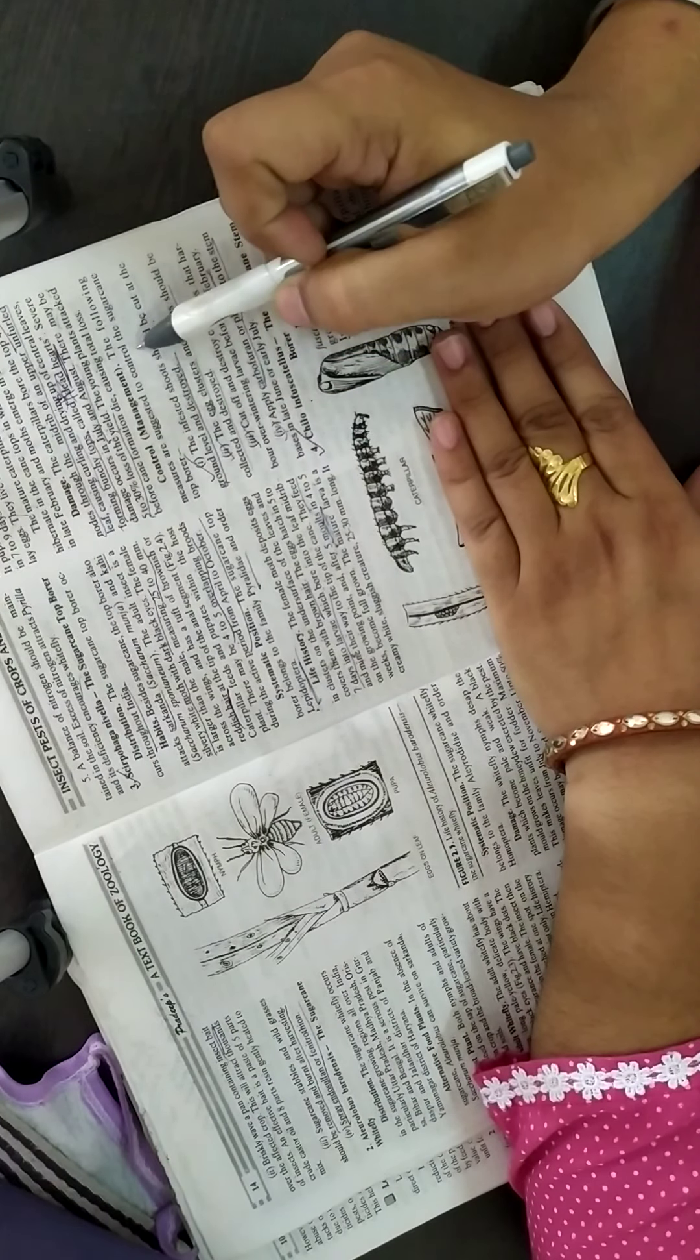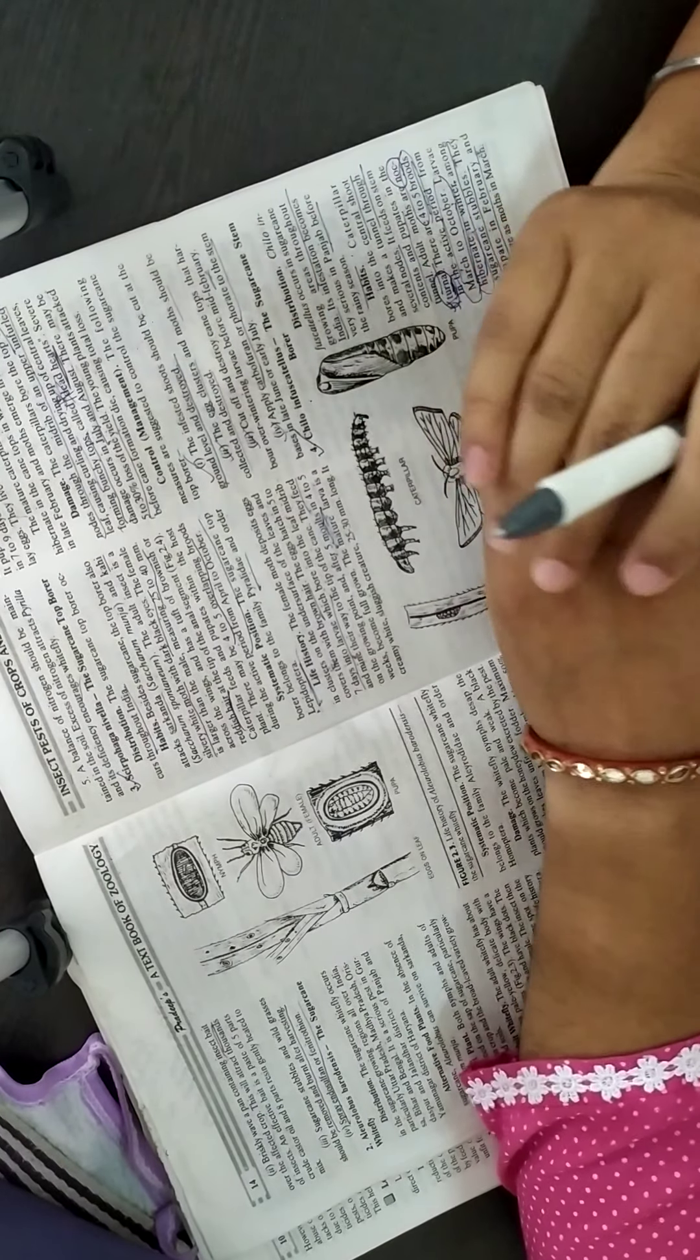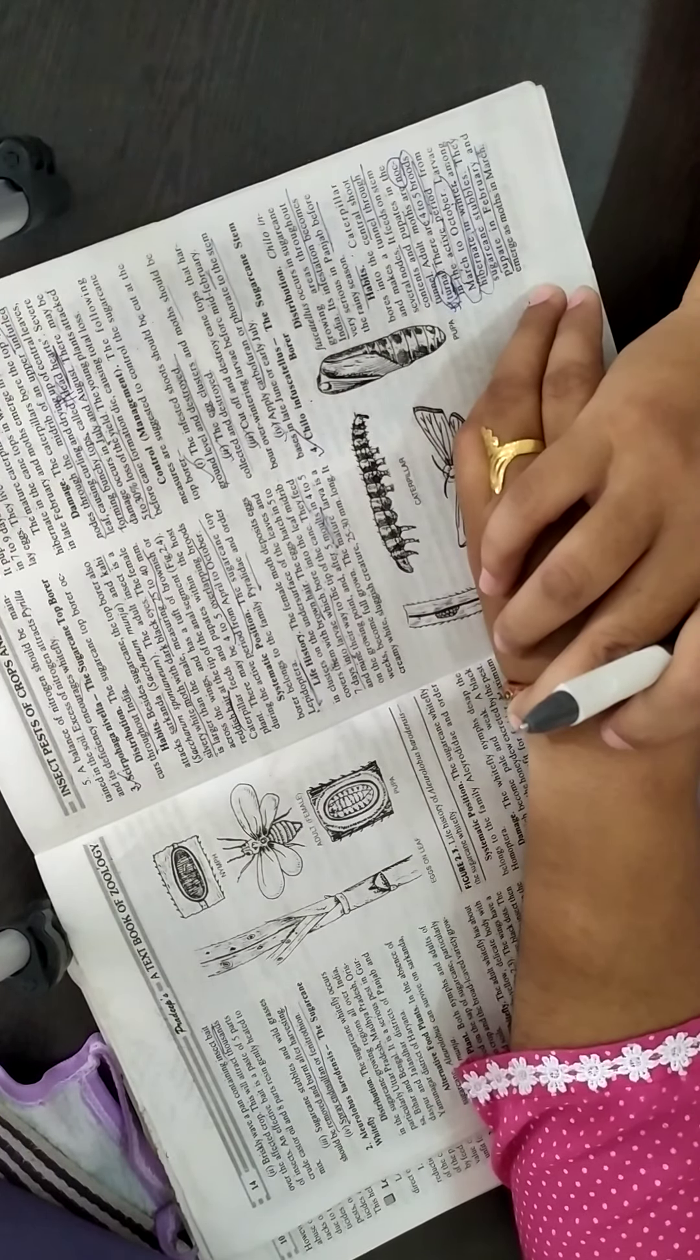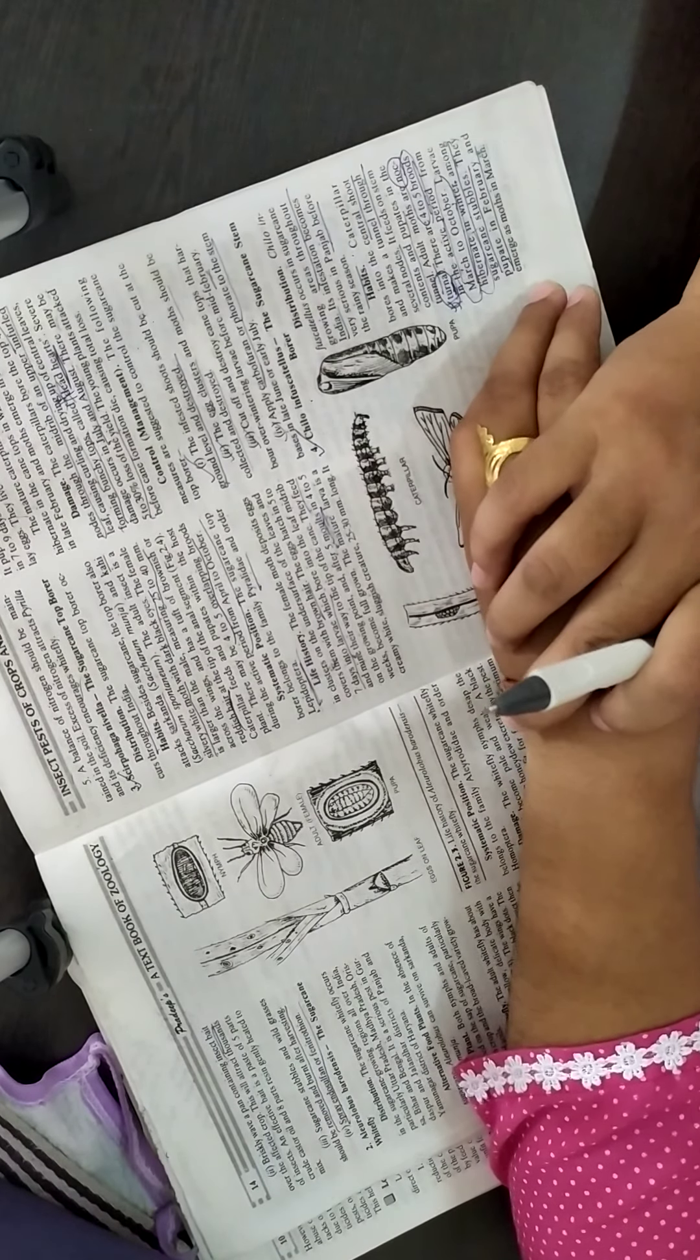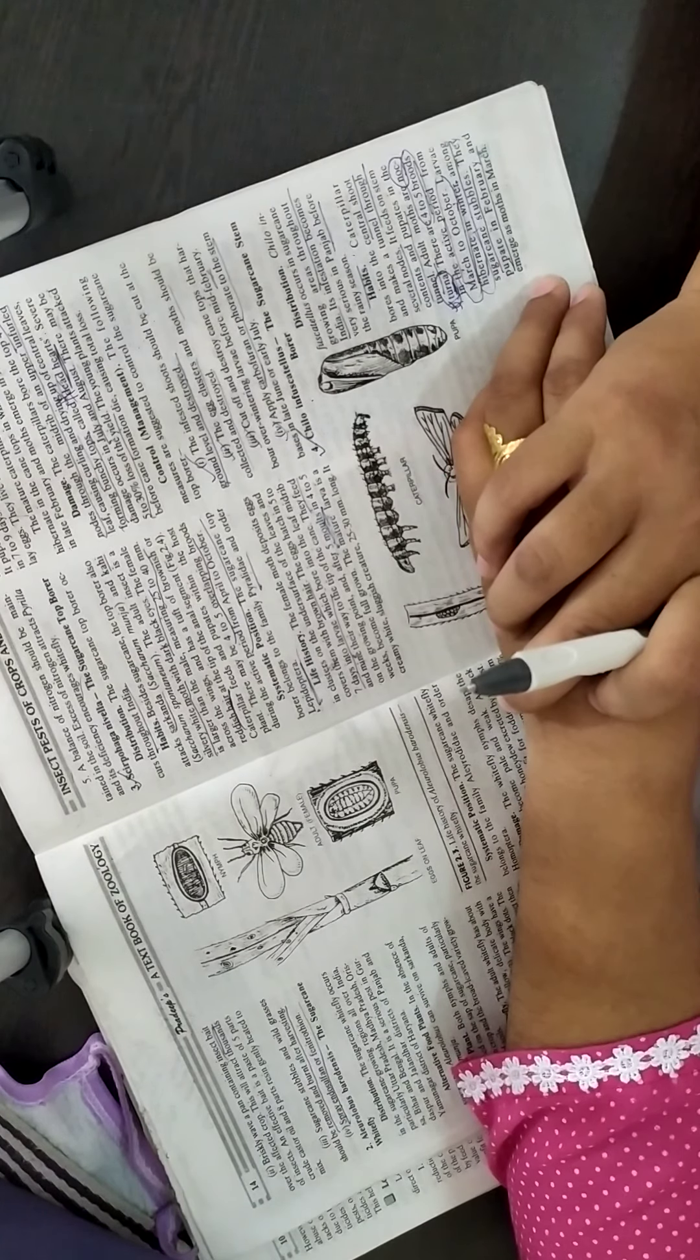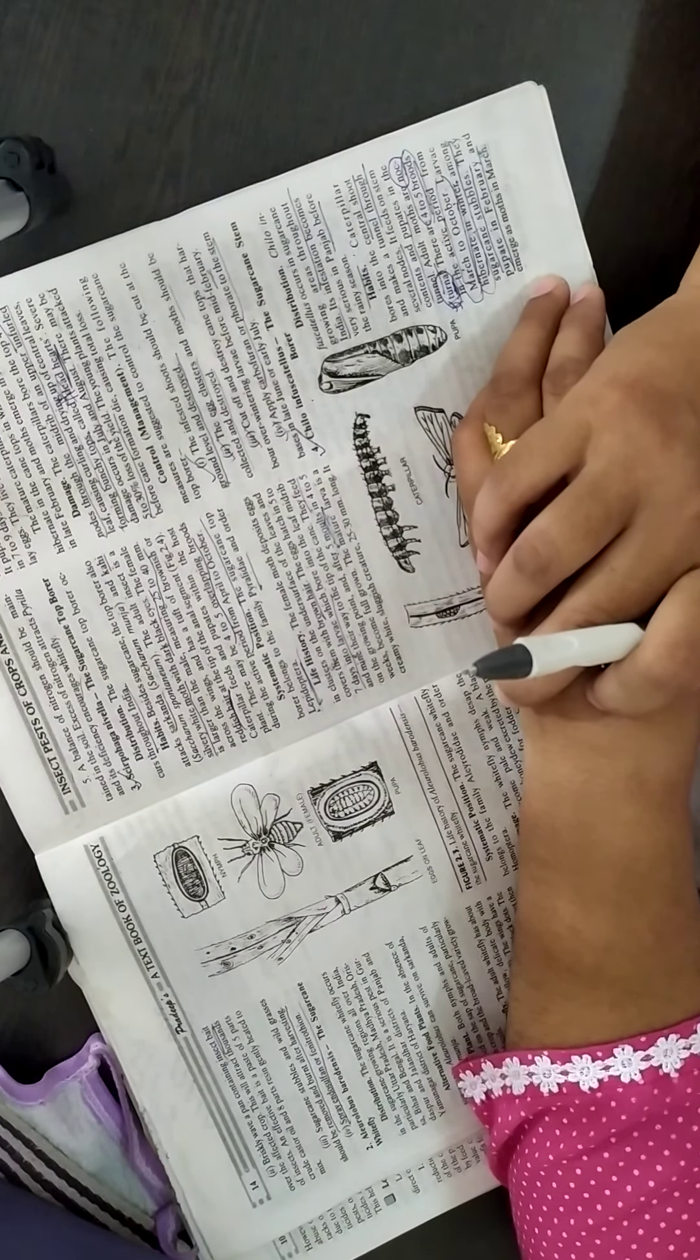Now comes to the last point, that is control or management of this pest. The infested shoots are cut and burned by the farmers or destroyed in any way. Next, egg clusters or moss should be collected and destroyed.